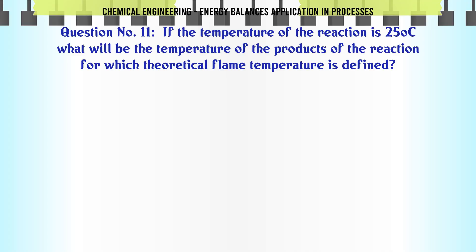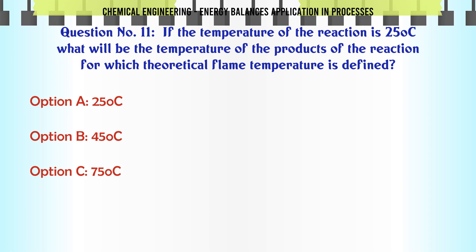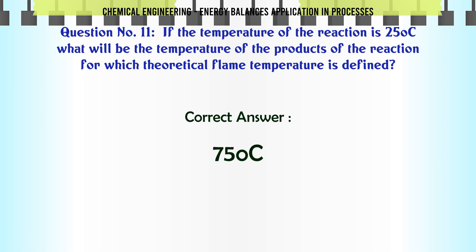If the temperature of the reaction is 25°C, what will be the temperature of the products of the reaction for which theoretical flame temperature is defined? A: 25°C. B: 45°C. C: 75°C. D: 100°C. The correct answer is 75°C.